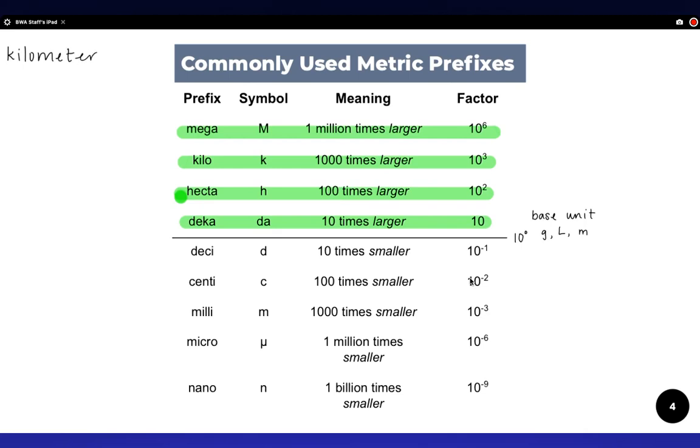That would be written as prefix and then base unit. So kilo is the prefix and meter is the base unit.